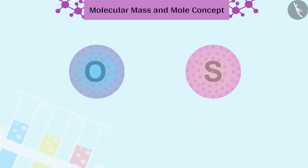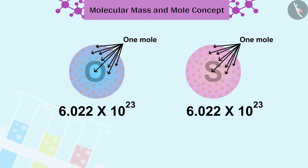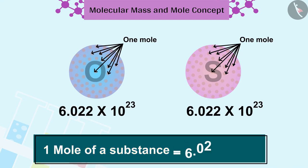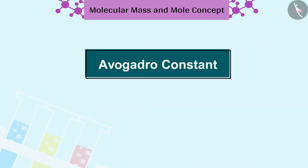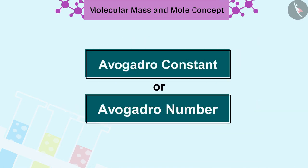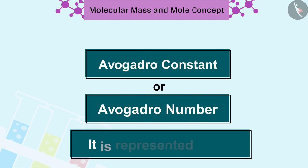The number of particles in a mole of a substance is fixed whose value is 6.022 into 10 raised to 23. It is called Avogadro constant or Avogadro number. It is represented by N₀.